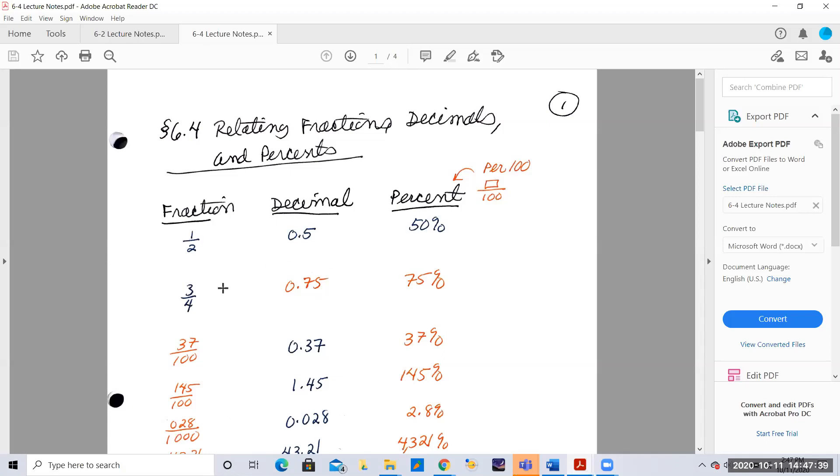There are several ways you can convert these. If you're given three-fourths, you could say that is three divided by four. Three divided by four.